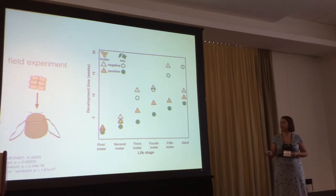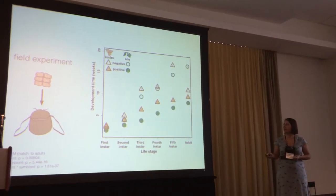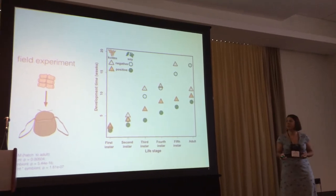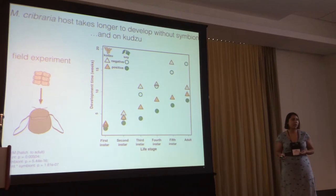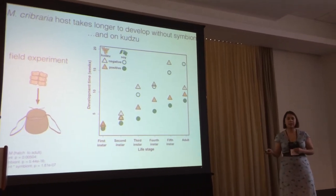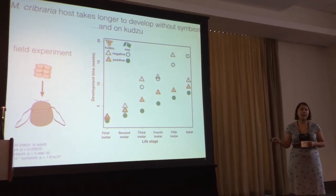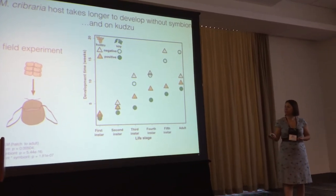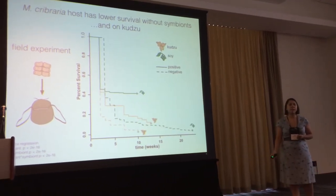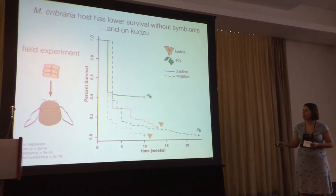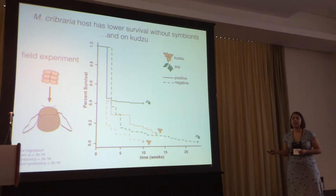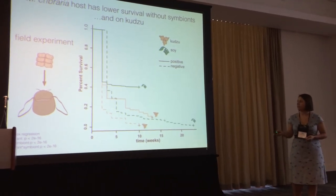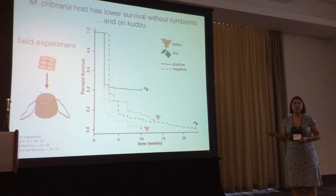As you can see here, there were differences observed. The filled circles show the symbiont positive treatments and the empty circles the symbiont negative — there is definitely an impact of the symbiont. There is also an impact of host plant: in green you can see development time on soy, and in brown on kudzu. Interestingly, they developed faster on soy than on kudzu, which we did not expect. Similarly with survival, the dashed lines for the symbiont negative treatments show lower survival than symbiont positive. Survival was actually higher on soy than on kudzu.